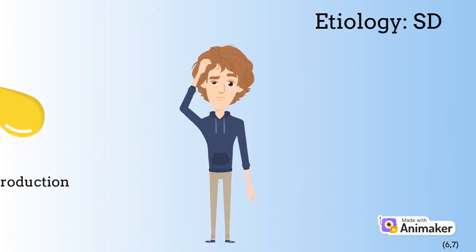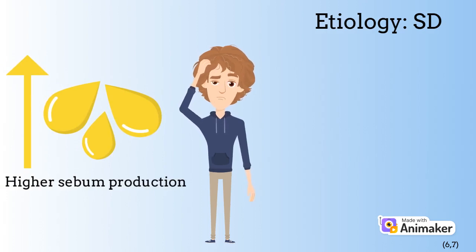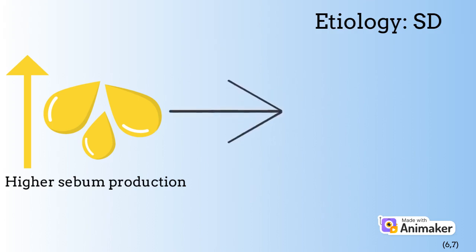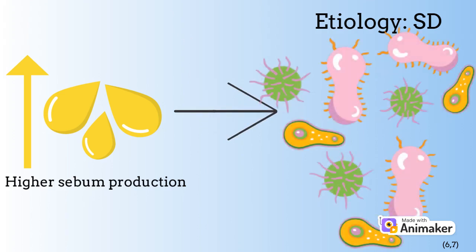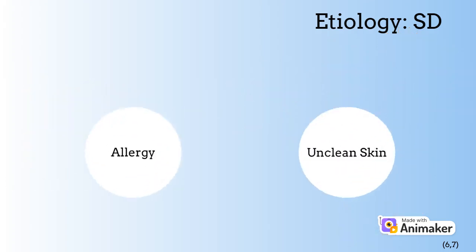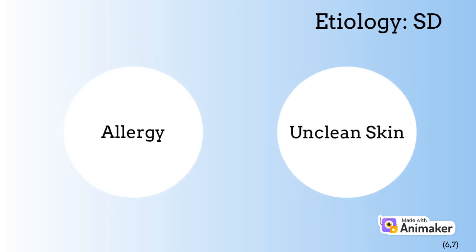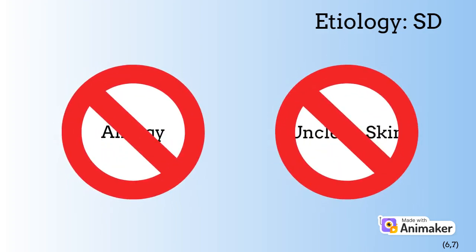Skin specialists have noticed that SD is actually more common during times of higher sebum production in the body. SD also develops on areas of the body with higher sebum, like the scalp, face, and chest. Due to these observations, dermatologists believe that malassezia feeds on sebum and grows, causing the body to react, resulting in SD symptoms. Although the exact cause of SD may still be unknown, we do know that SD is not an allergy, and it is not caused by unclean skin.